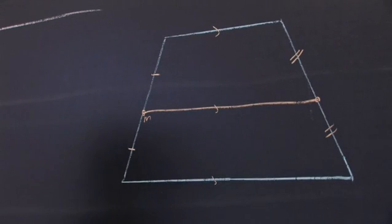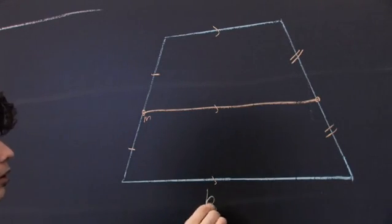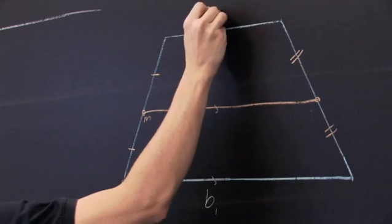The question is how do we find the length of m if all we know is the length of the two bases, which we'll call b1 and b2.